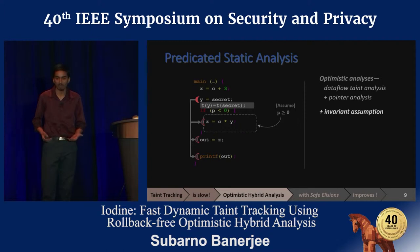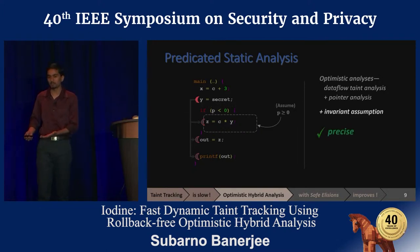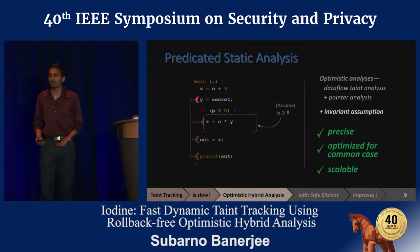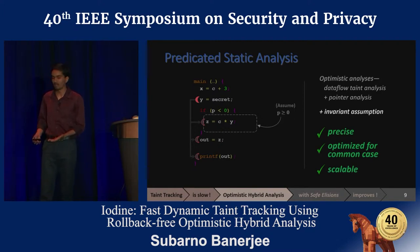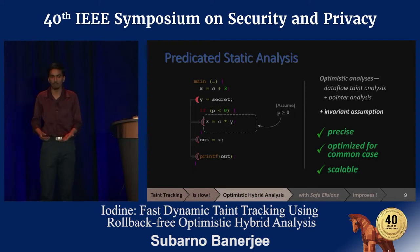Further, using backward reachability, it can reason that Y's taint would never reach the sink — that is, the print statement — and elide tracking that as well. This simple assumption allows us to elide all the taint monitors in our example. So this predicated analysis is much more precise, targeted to the common case behavior, and scalable.